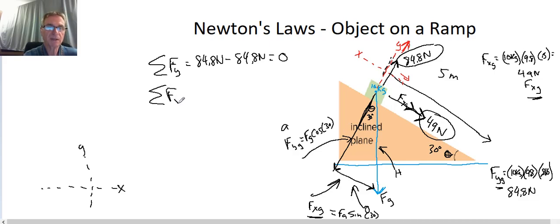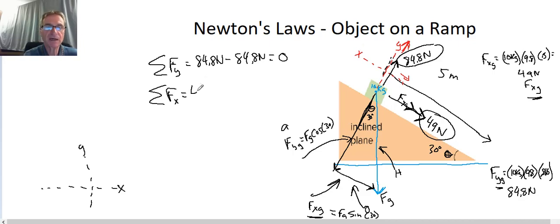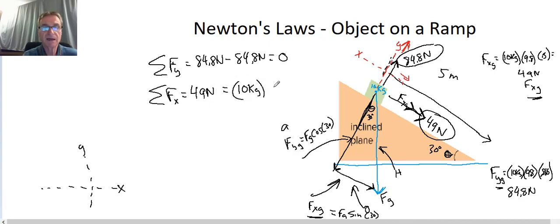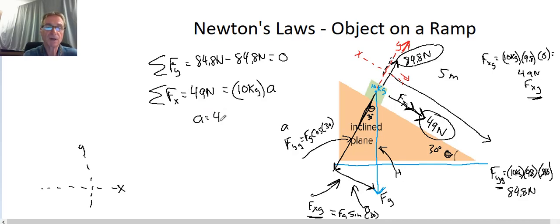Now let's write the equation in the x direction — our new coordinate system's x direction going down the ramp. We have positive 49 newtons, and there are no other forces in the x direction. So 49 N equals mass times acceleration: 49 = 10 kg × a. Dividing, we get acceleration equal to 4.9 meters per second squared. There's our acceleration of the block.